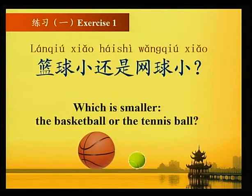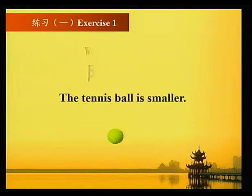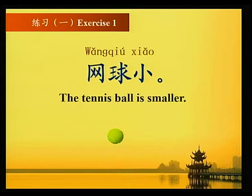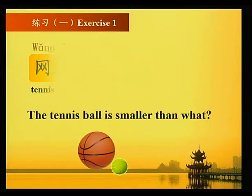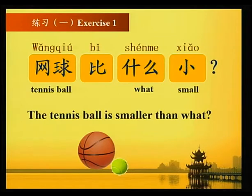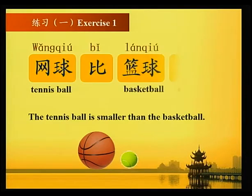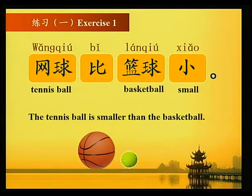篮球小还是网球小？Which is smaller, the basketball or the tennis ball? 网球小 — the tennis ball is smaller. 网球比篮球小 — the tennis ball is smaller than the basketball.